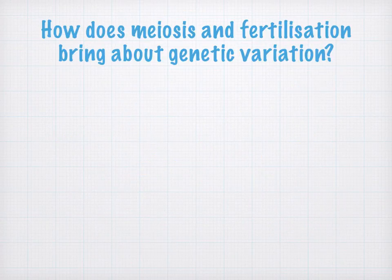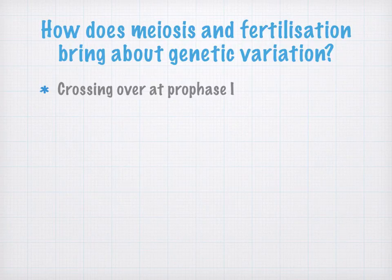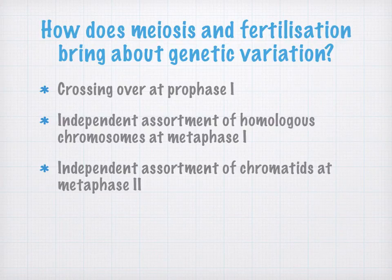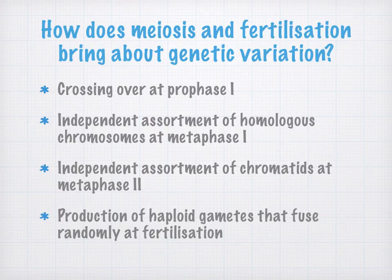So how does meiosis and fertilization bring about genetic variation? You've got crossing over at prophase I, independent assortment of homologous chromosomes at metaphase I, independent assortment of chromatids at metaphase II, and then the production of haploid gametes that fuse randomly at fertilization. We're going to look at each of these in detail.